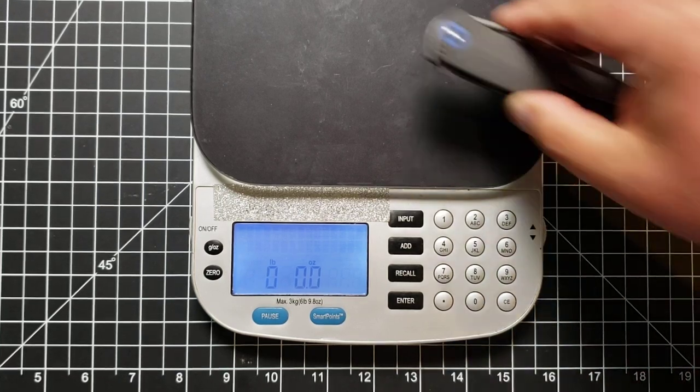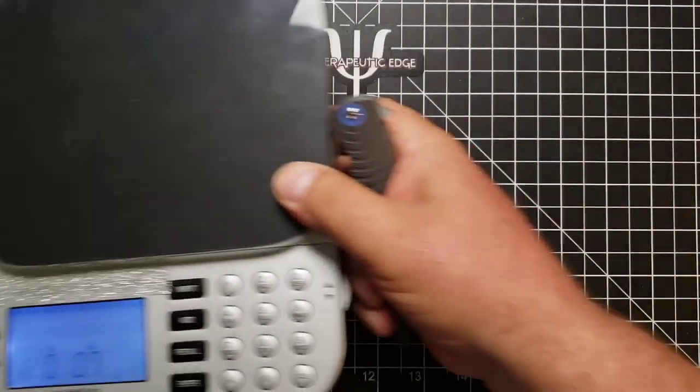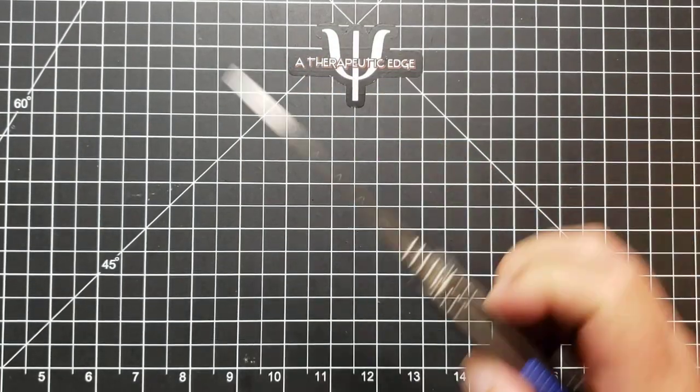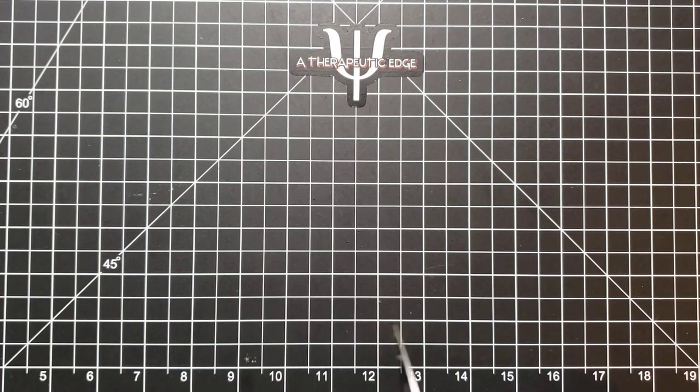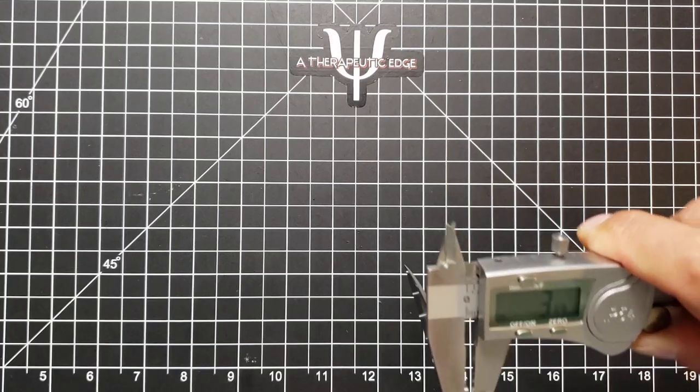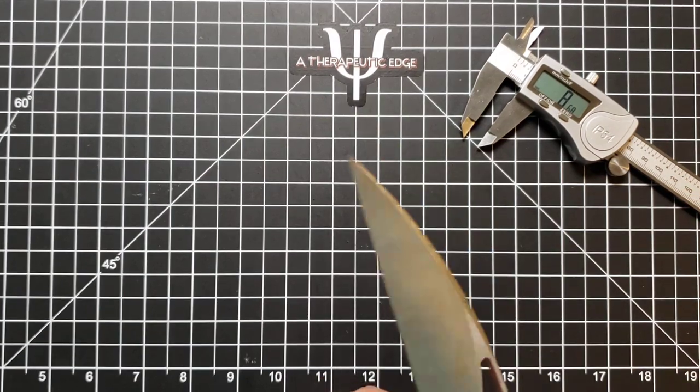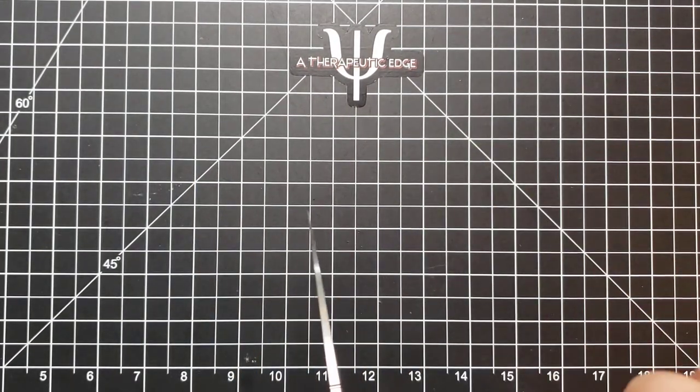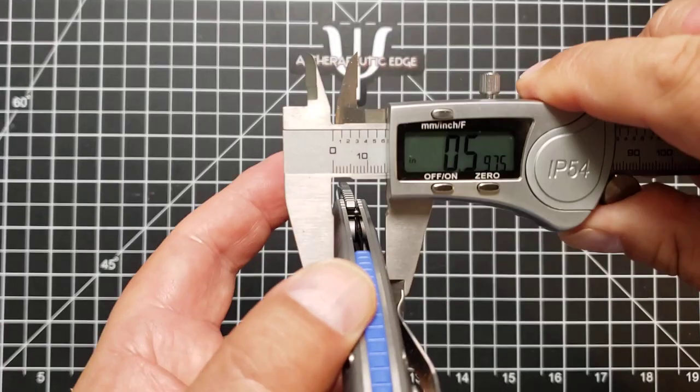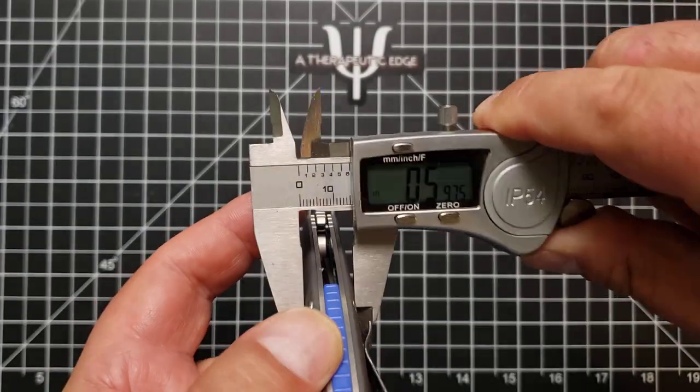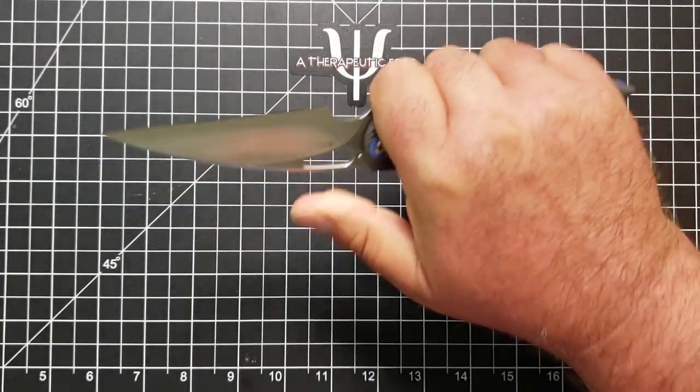4.1 ounces for almost 4 inches of 14C28N blade steel coming in at 3.6 millimeters. As I said, it is a nice thick chunk of 14C28N. The handle has a nice thickness to it. If we go to the thickest point, it is 15 millimeters, or just a little tiny bit over a half inch. It makes for a fantastic handhold. It really does.